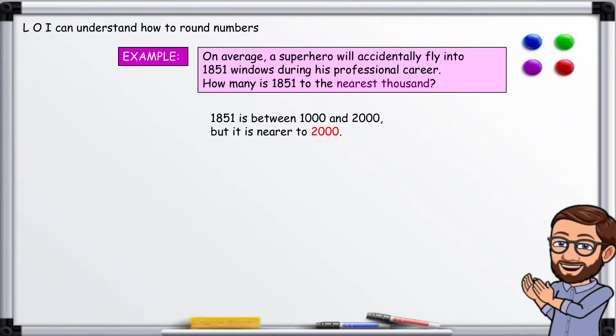One thousand eight hundred and fifty-one is between one thousand and two thousand, but it is nearer two thousand.